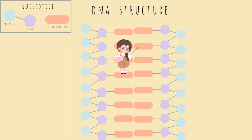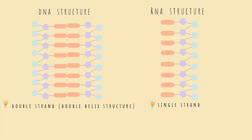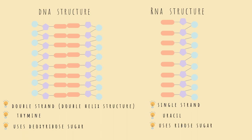We have a pair because two nucleotides meet in the middle. Let's compare the DNA structure to the RNA structure. DNA is made of a double strand — a double helix — while RNA is made of a single strand. DNA has the nucleotide thymine, while RNA has uracil. DNA uses the sugar deoxyribose, hence the name deoxyribonucleic acid, and RNA uses ribose, which is why RNA stands for ribonucleic acid.